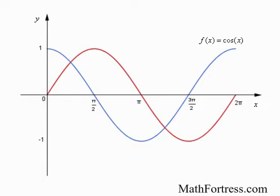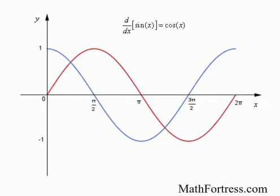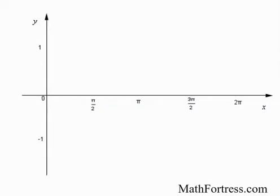So it turns out that the derivative of sine of x is actually cosine of x — pretty neat! Now that we know how to find the derivative of sine of x, let's try to figure out what the derivative of cosine of x is equal to.